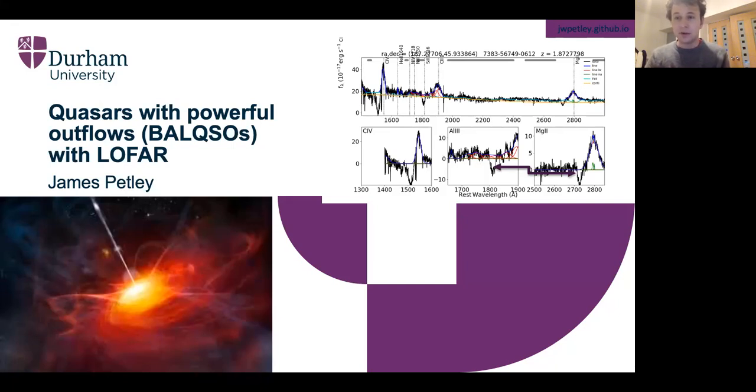You can also split BALs into two types: low BALs and high BALs. Here I've shown a low BAL that has similar absorption features at lower ionization lines, so aluminum 3 and magnesium 2, whereas high BALs don't show these features at all.